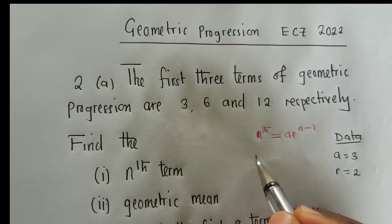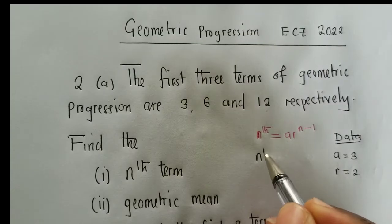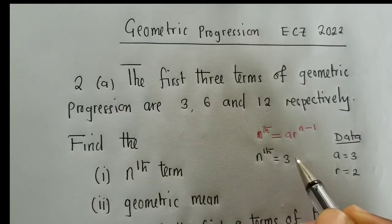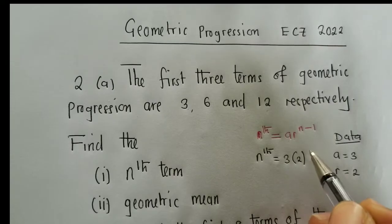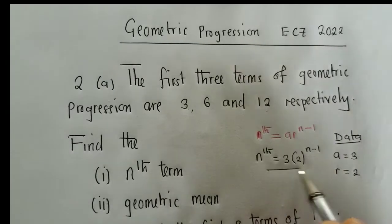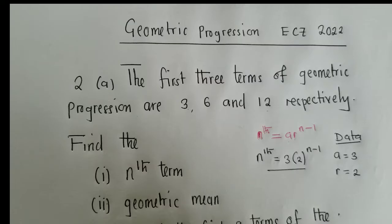So you just plug in this formula. We shall say nth is equal to 3 times 2 to the power of n minus 1. So this is our solution for the first question.